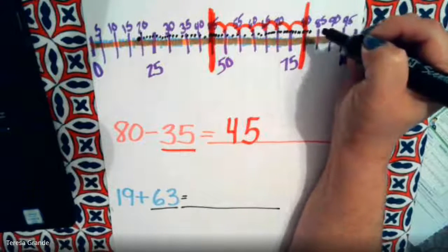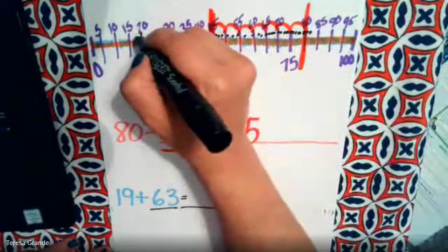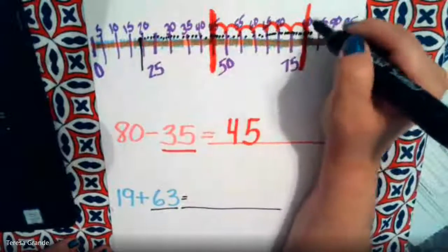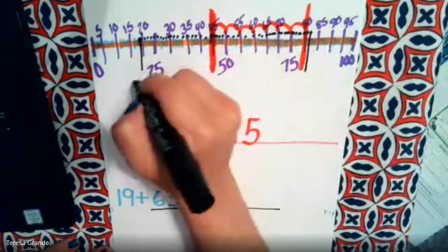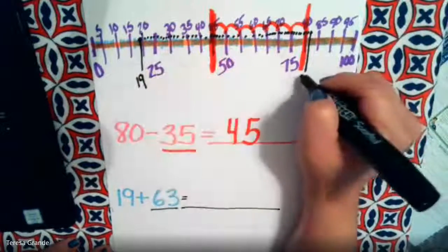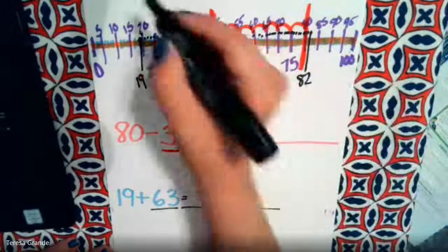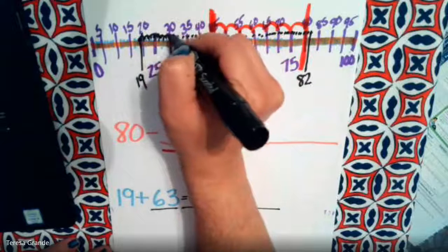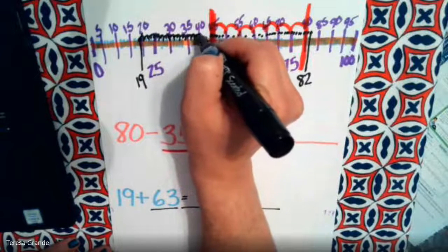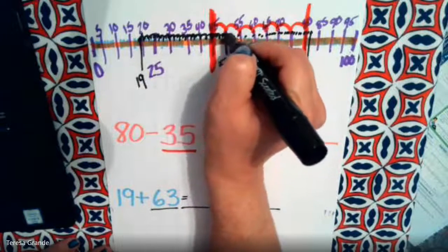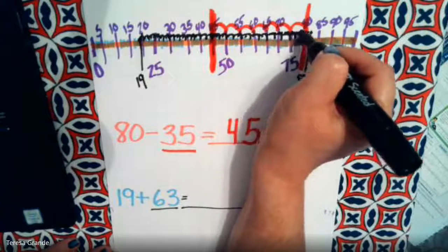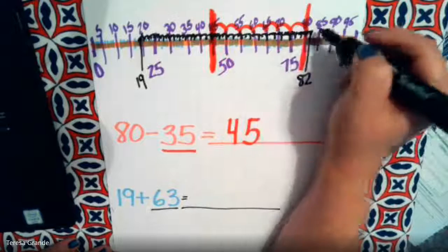82, that got me 62. 19 is here, 82 is here, so 19 and 82. What we did is we just kept counting by ones. We had to add 63 to 19, move the whole way up until we got to 82.